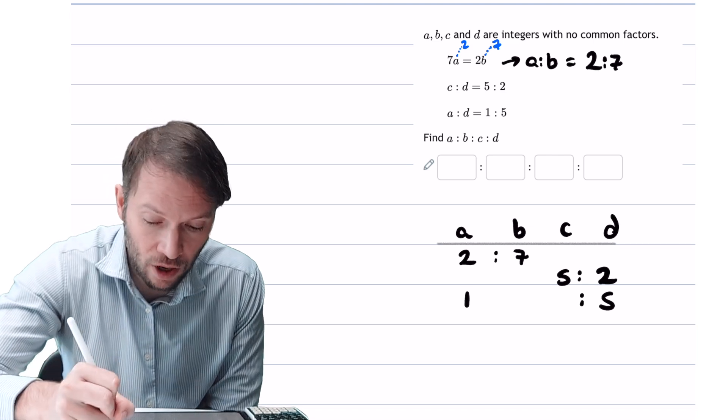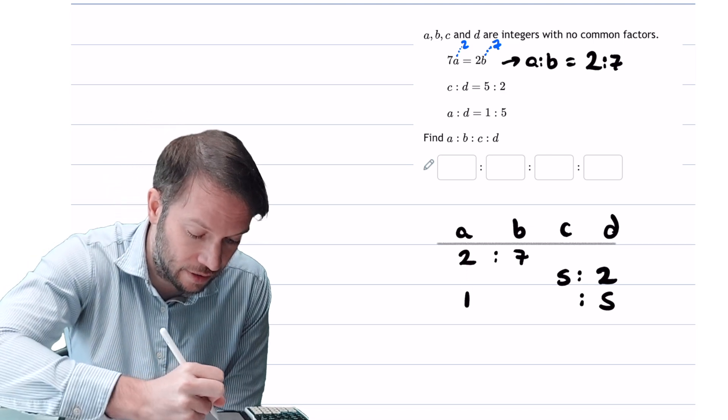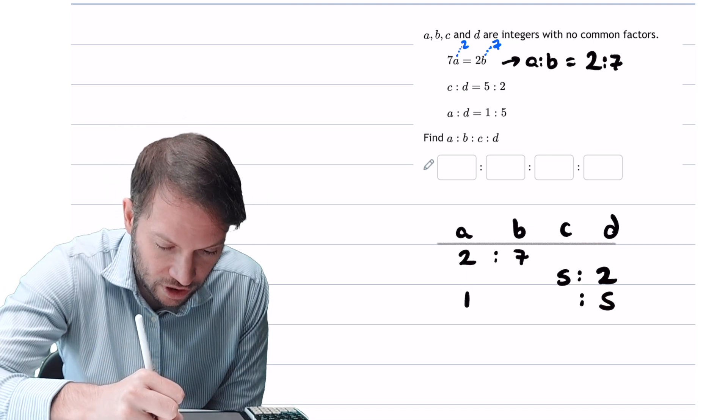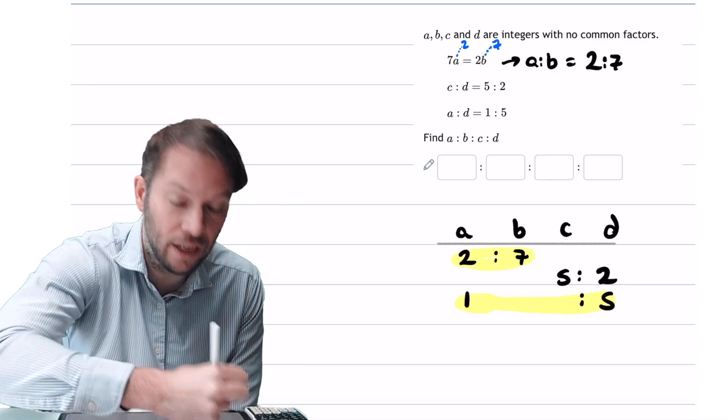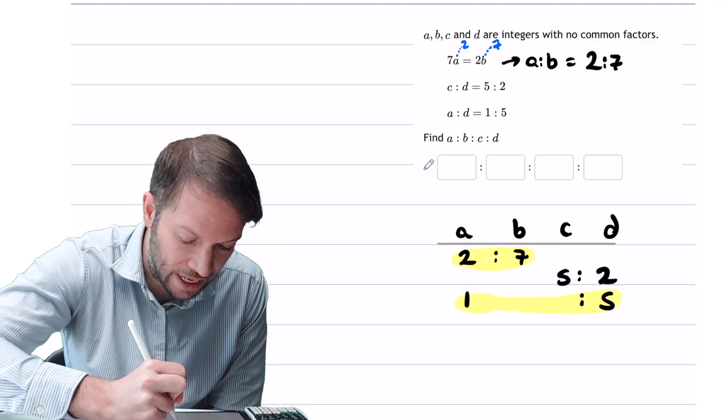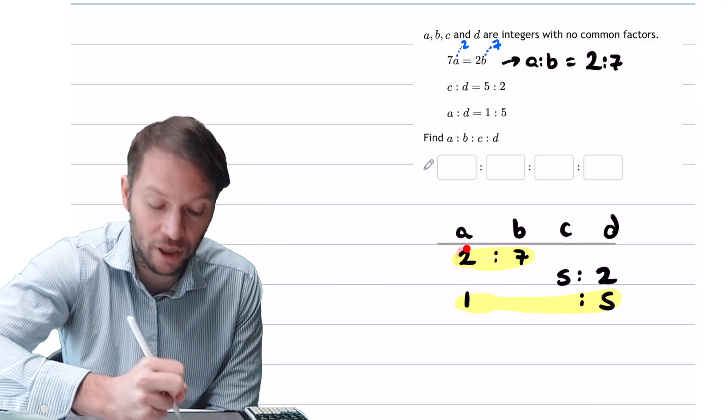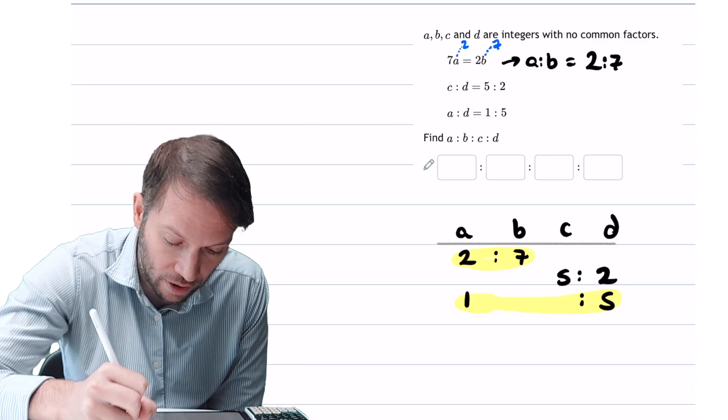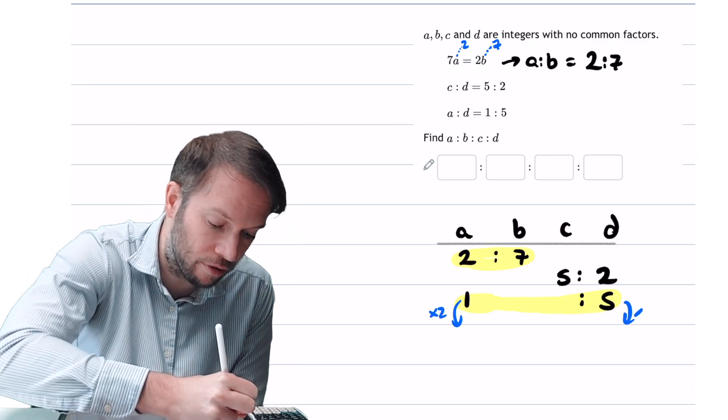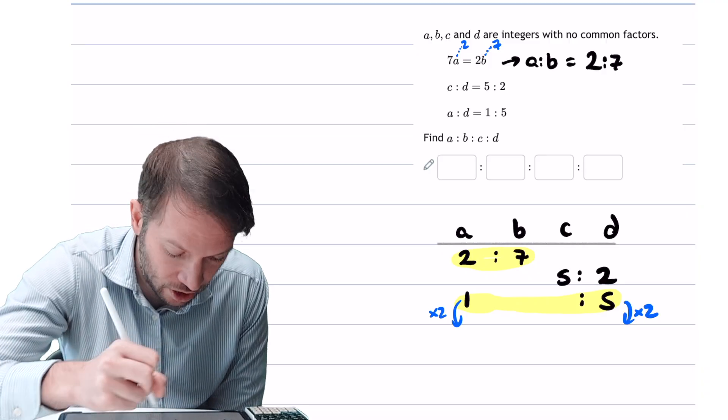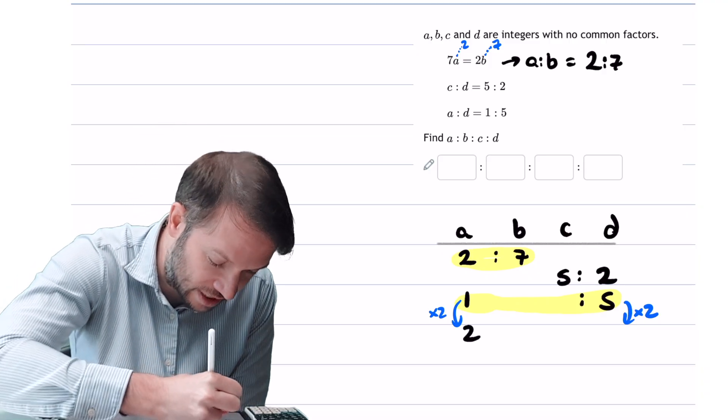Now to combine them together, we need these numbers to be the same. So let's suppose we wanted to combine the 2 to 7 and the 1 to 5 together in one ratio. Can you see the common number is the a, and we've got the one part here, and the two parts here. So if you just multiplied this and this by 2, because whatever you do to one part of the ratio, you have to do the same to the other, you can see you're going to get 2 to 10.